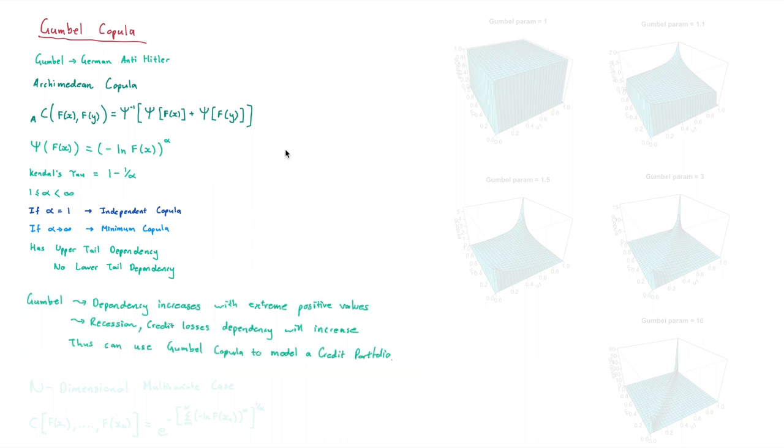And this is something that we can use when it comes to, say, credit portfolios, specifically with credit losses. We'll see that their dependency increases during times of recession. So, this is an application of the Gumbel's Copula.